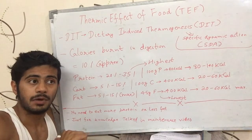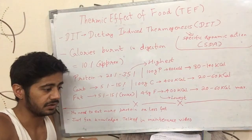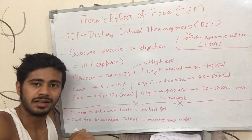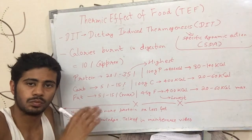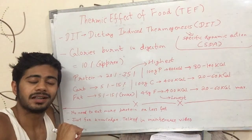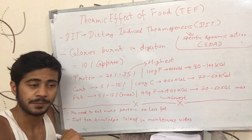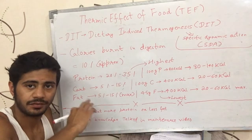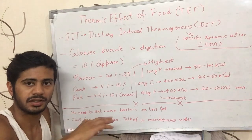Basically, thermic effect of food is the amount of calories that your body burns for digesting the food that you ate. That amount is about 10% of the total calories you eat. For example, if you ate 2000 calories, 10% of 2000 is around 200 calories, so your body will burn around 200 calories to digest and absorb those 2000 calories. Effectively, only 1800 calories will be left for your body to use in other processes. The digestion, absorption, and storing process together takes about 10% of calories.